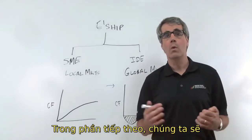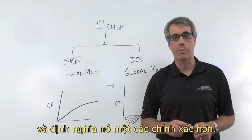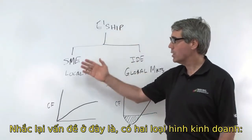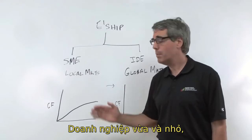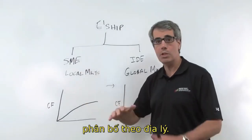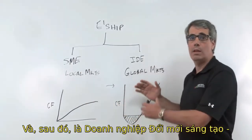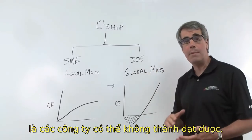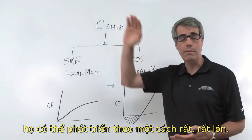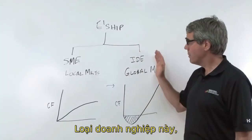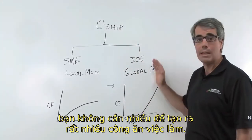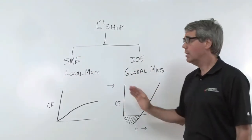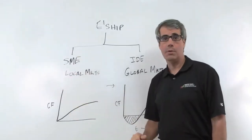In the next section, we're going to look at what innovation is and define that more precisely. But the point here is two types of entrepreneurship: small medium enterprise entrepreneurship — small companies distributed geographically — and innovation driven enterprise entrepreneurship — companies that might not make it, but if they do, they grow very, very big. You don't need a lot of IBEs to generate a lot of jobs, whereas SMEs you need many. IBEs tend to be more clustered; SMEs tend not to be.